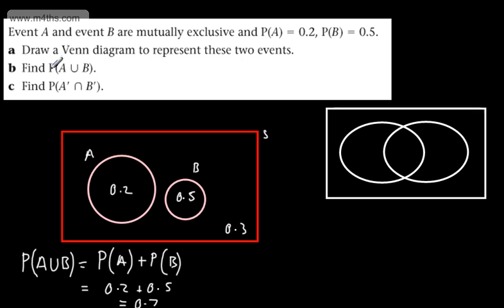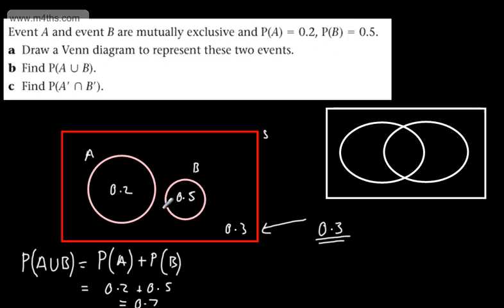We need the probability of not-A and not-B. That's on the outside, so it equals 0.3 — we've subtracted the probability of A and the probability of B from 1, leaving 0.3.